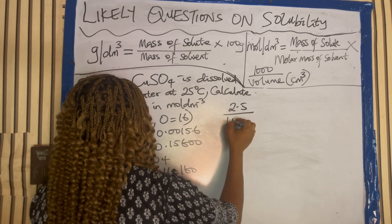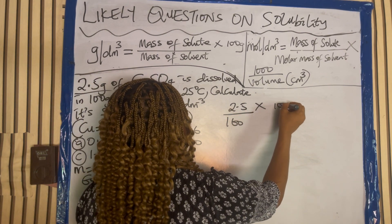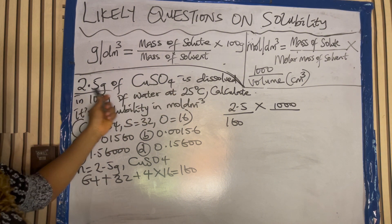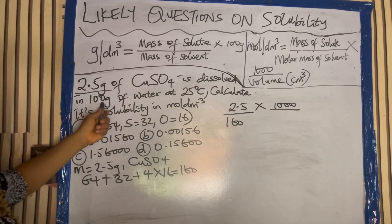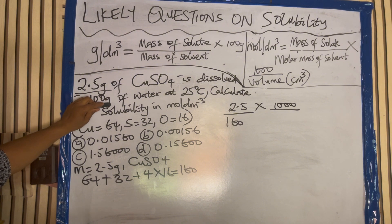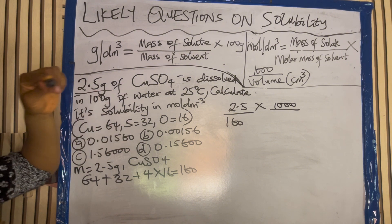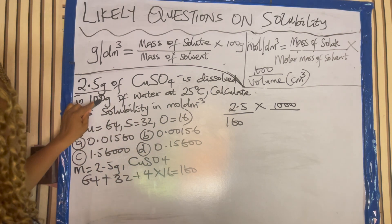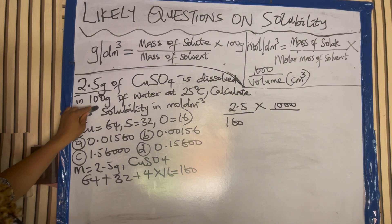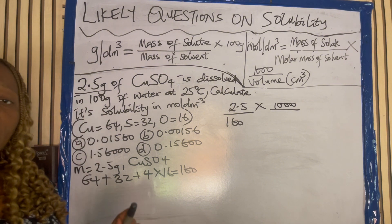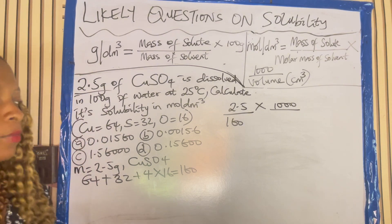Using the formula, the mass of the solute is 2.5, molar mass is 160, times 1000 over volume. Now what is the volume here? This copper sulfate is dissolved in 100 gram of water. They didn't give it to you in cm cube — they gave it to you in gram. But as long as you hear mole per dm cube, you are going to use this as cm cube, because this is volume.